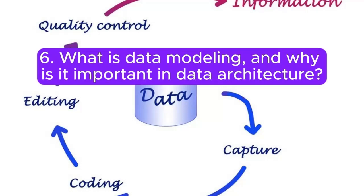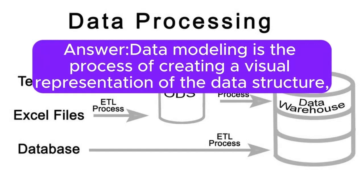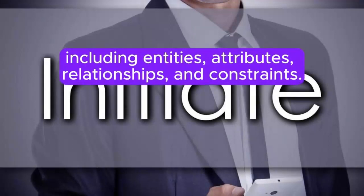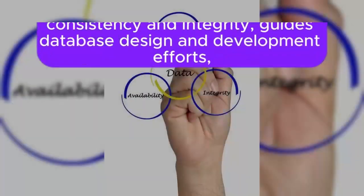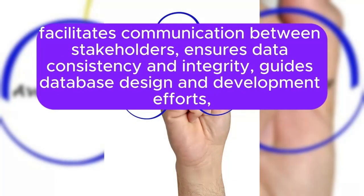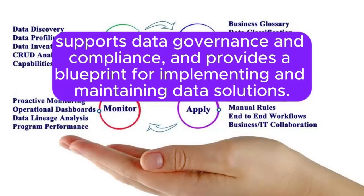Question 6: What is data modeling, and why is it important in data architecture? Data modeling is the process of creating a visual representation of the data structure, including entities, attributes, relationships, and constraints. It is important because it helps to understand and define the structure of the data, facilitates communication between stakeholders, ensures data consistency and integrity, guides database design and development efforts, supports data governance and compliance, and provides a blueprint for implementing and maintaining data solutions.